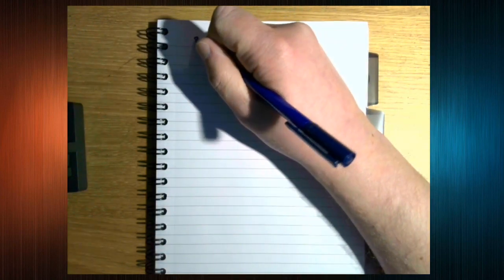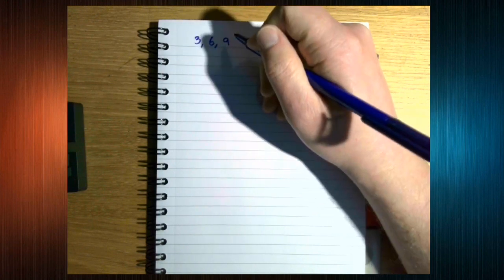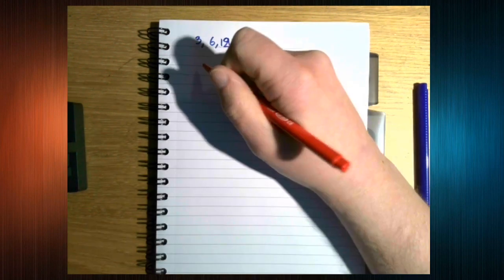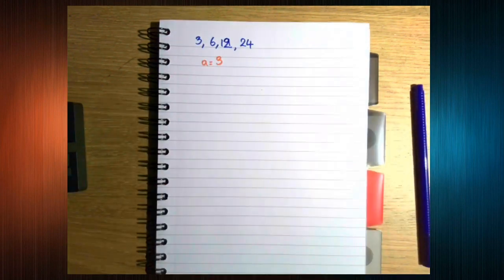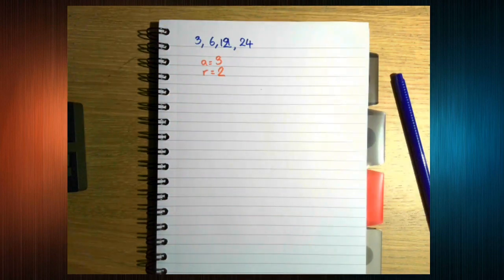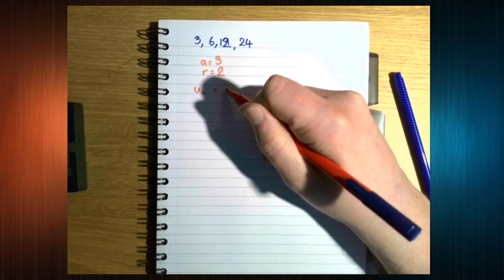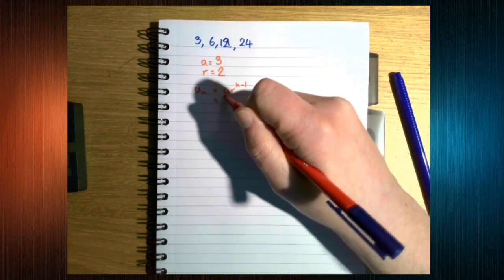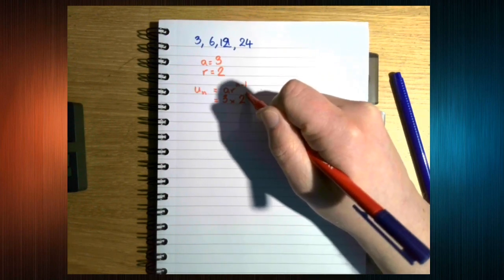So this means we can work out terms of a geometric sequence. Let's say we've got the sequence 3, 6, 12, 24, like I said before. So we've already identified that the first term is a. So a is 3. The common ratio r is 2. So we're timesing by 2. So the nth term, which is ar to the n minus 1, is going to be 3 times 2 to the n minus 1.